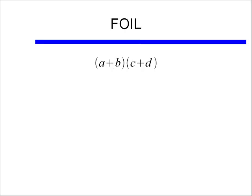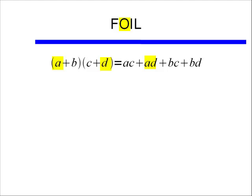Here's a review of FOIL. If I have two binomials that I multiply together, (a + b) times the quantity (c + d), then that's the first a times c, plus the outer a times d, plus the inner b times c, plus the last b times d.